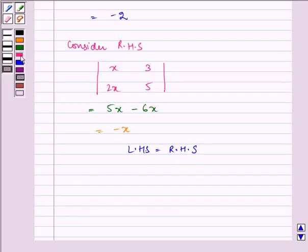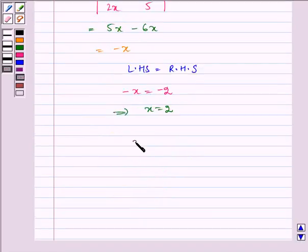So we get minus x is equal to minus 2 which implies x is equal to 2. Therefore the required value of x is x is equal to 2.